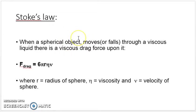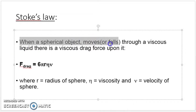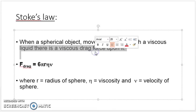How can viscosity be measured? There is a law known as Stokes law, which says when a spherical object moves or falls through a viscous liquid, there is a viscous drag force which affects the liquid's flow.